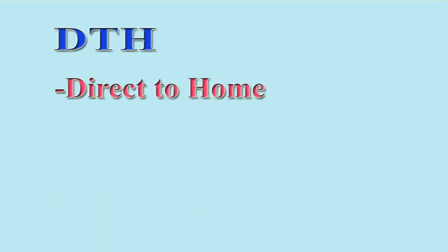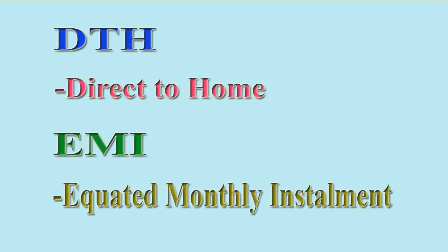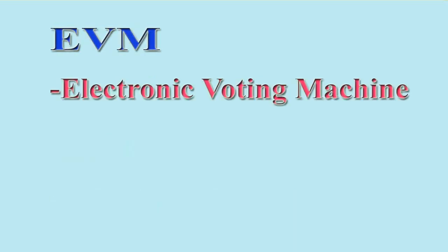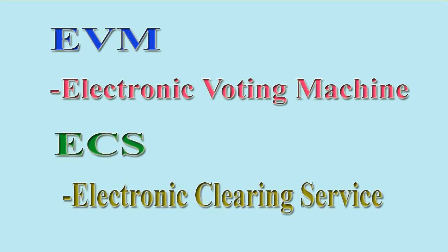DTH: Direct to Home. EMI: Equated Monthly Installments. EVM: Electronic Voting Machine. ECS: Electronic Clearing Services.